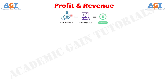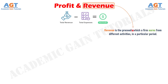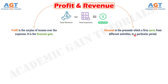For earning profits, revenue should always be more than the cost of inputs, or else the firm would not be able to survive in the long run. Revenue is the proceeds which a firm earns from different activities in a particular period. On the contrary, profit, as we all know, is the surplus of income over the expenses.